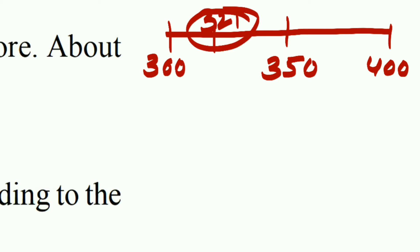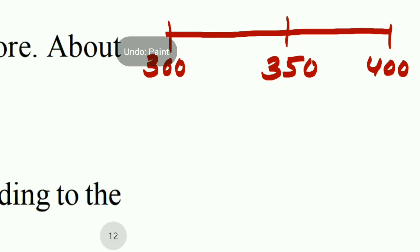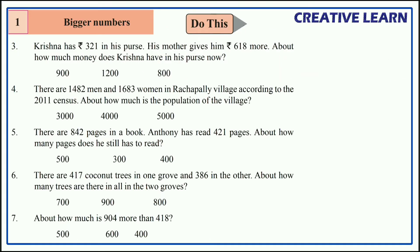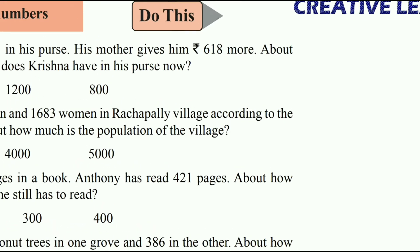From this we can easily identify that 321 is nearer to 300 but not to 400. So 321 is nearer to 300, and the approximate amount of money Krishna had is 300.